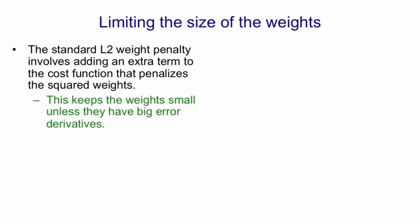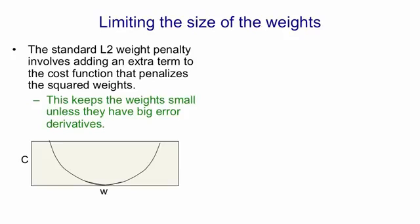This weight penalty keeps the weights small unless they have big error derivatives to counteract it. If you look at what the penalty term looks like as the weight moves away from zero, you get this parabolic cost.